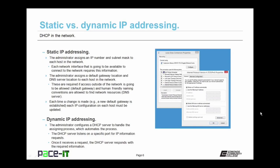These settings are required if access to outside networks is going to be allowed — that would be through the default gateway — and if human-friendly naming conventions are going to be allowed — that would be through a DNS server. Each time a change is made, as in a new default gateway is established, each IP configuration on each host must be updated. That's why it becomes rather cumbersome and complicated as the network grows.